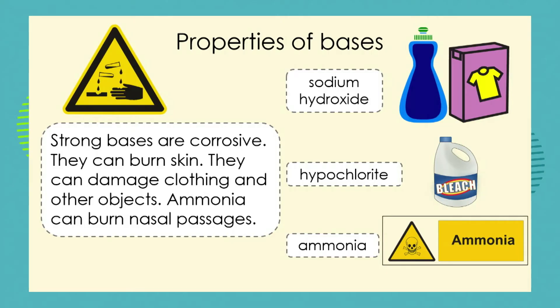This brings us to another interesting property of bases: they are corrosive. This is a property that bases have in common with acids. Strong bases such as bleach, washing powder, drain cleaners, and oven cleaners are also corrosive. Something corrosive can burn or eat away at a surface — it can burn the skin on your hands and even damage clothing if it is a very strong base.